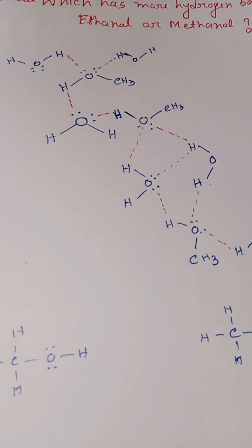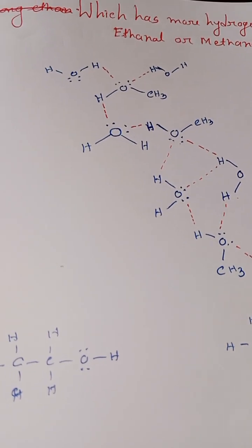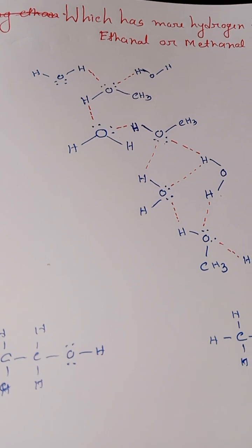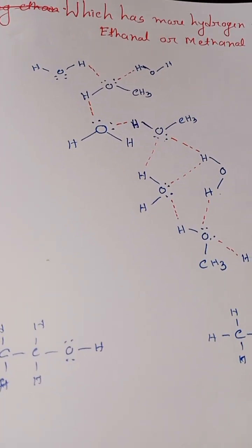But if we check the boiling point, we can see ethanol has a higher boiling point than methanol. Ethanol boiling point is close to 78 degrees Celsius and methanol is around 64 or 65 degrees Celsius.